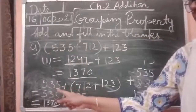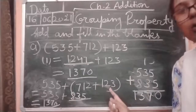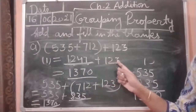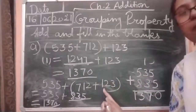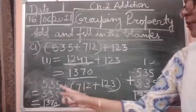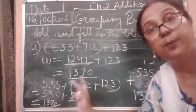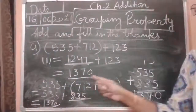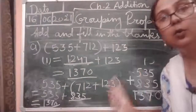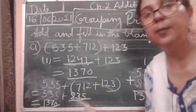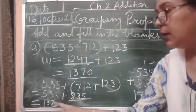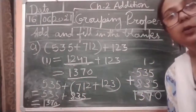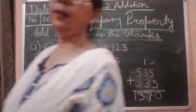You can see: 535 is written here, and we just made a new group — 712 plus 123. Here 123 is out of the bracket and 535 is out of the bracket in the first arrangement. We just changed the place of the number, we just made a new group. After adding all three numbers we are getting the same sum: 1,370. So children, this is called grouping property.